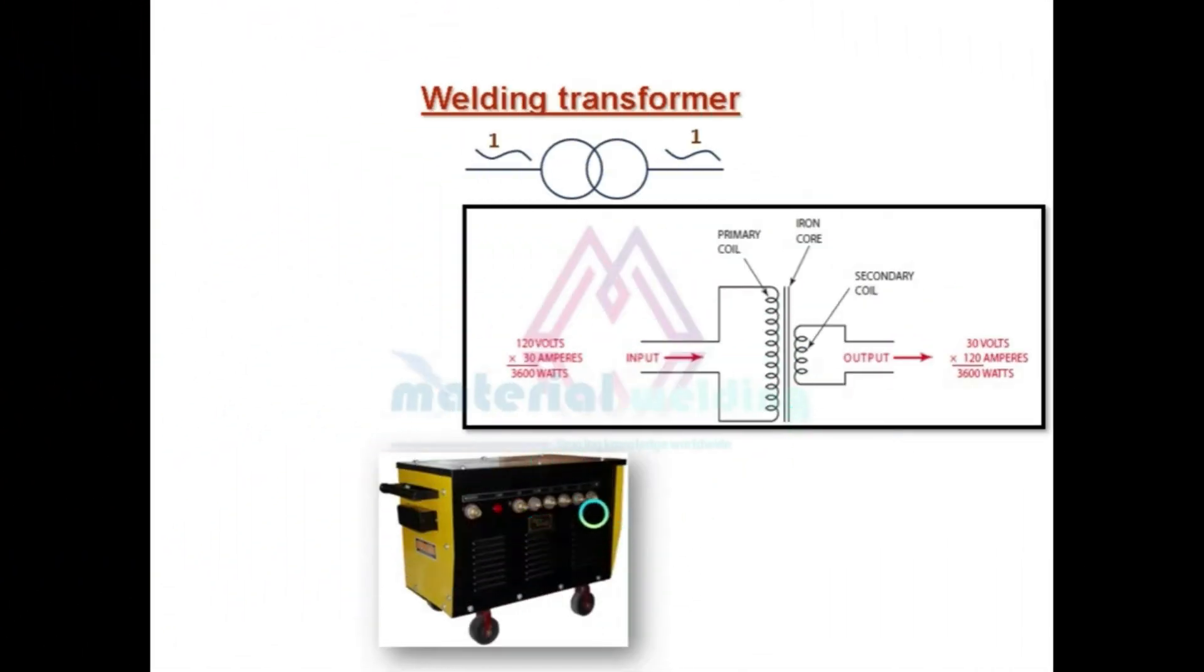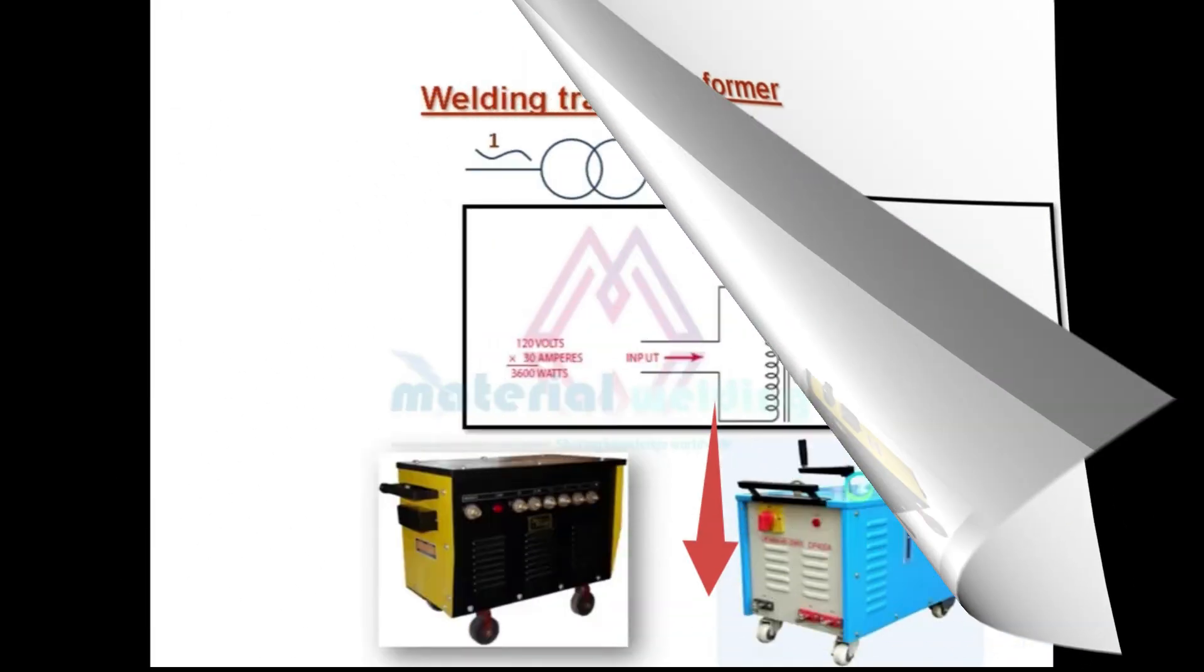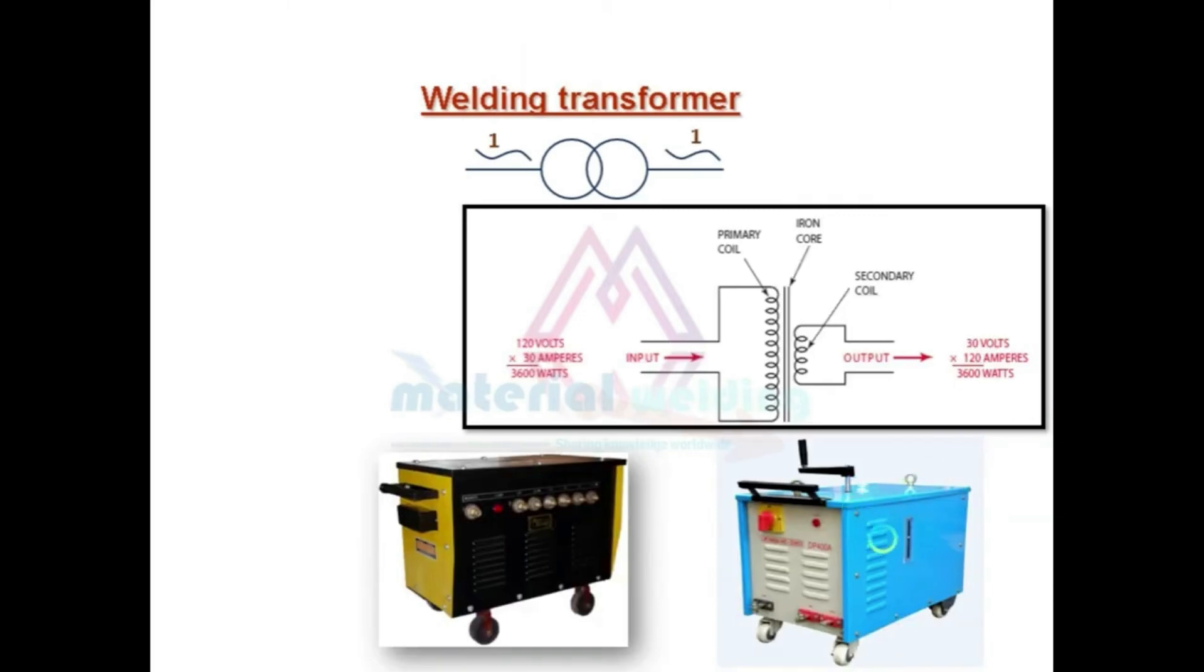The picture shows how a transformer type welding power source looks like. One way to identify is the multiple connectors available on the front side. As there is no current adjustment controls, these different connectors are connected to the secondary wiring of the transformer. So when the number of secondary wiring turns varies, we get different output current for welding operation. Some type of welding transformer use a rotating handle for this purpose, as you can see in this picture.